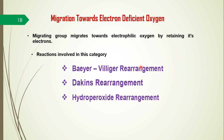For migration towards electron-deficient oxygen, where the migration terminus is an electron-deficient oxygen atom, the reactions include: Baeyer-Villiger rearrangement, Dakin rearrangement, and hydroperoxy rearrangement.